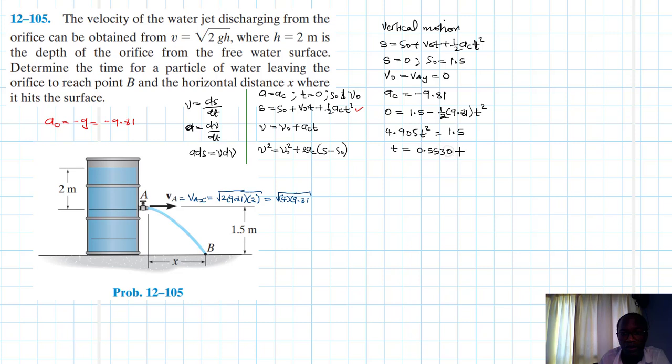So 1.5 divided by 4.905, square root of that, our time is 0.553 seconds. Let me check it again: 1.5 divided by 4.905, square root of that, 0.553. This is the time it takes, the time of flight from A to B for the water particle is equal to 0.553 seconds.